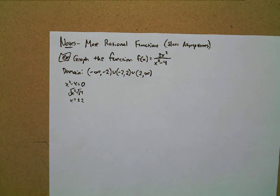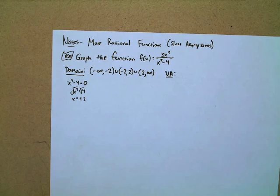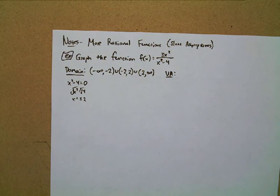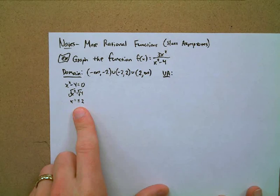Now let's identify any vertical asymptotes. Haley, what are the equations going to be for our vertical asymptotes? Both x = 2 and x = -2 make our denominator zero but do not make our numerator zero, so we look to those domain restrictions for the vertical asymptotes.